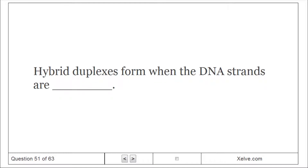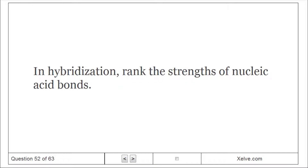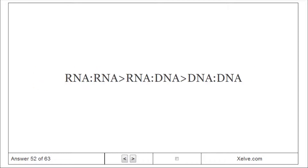Hybrid duplexes form when DNA strands are complementary. In hybridization, ranked by strength of nucleic acid bonds: RNA:RNA > RNA:DNA > DNA:DNA.